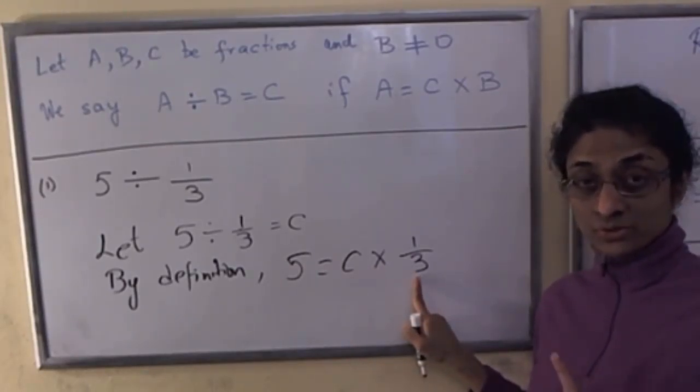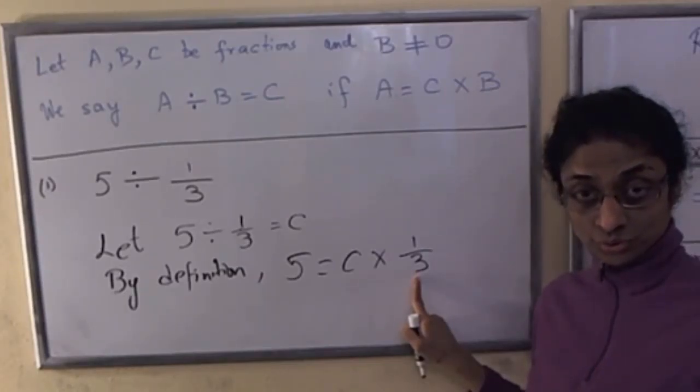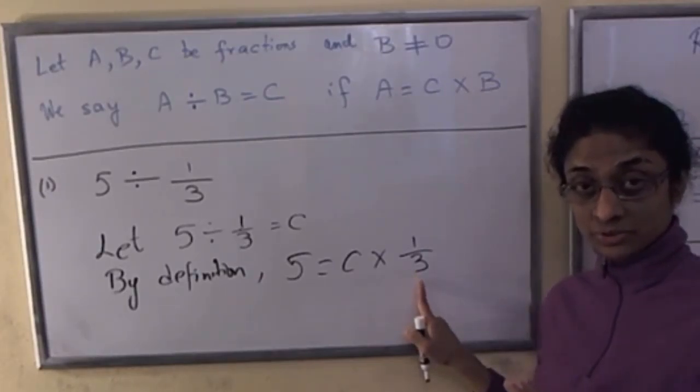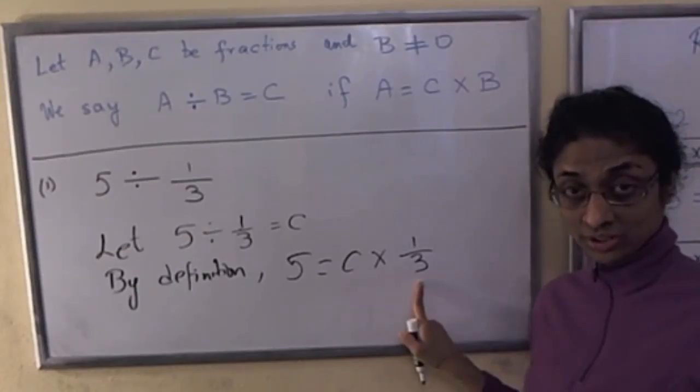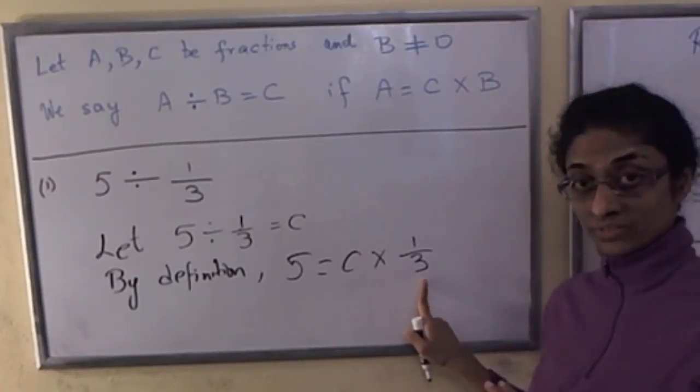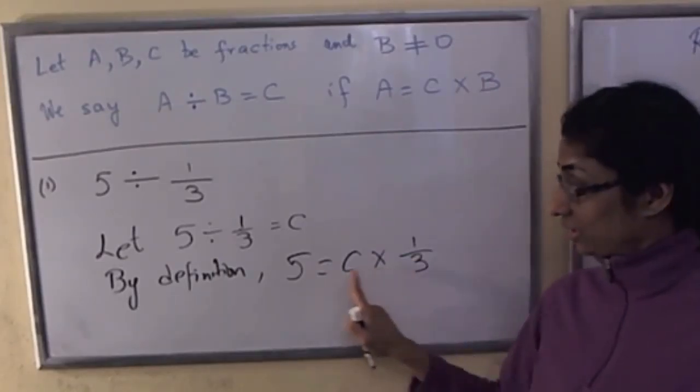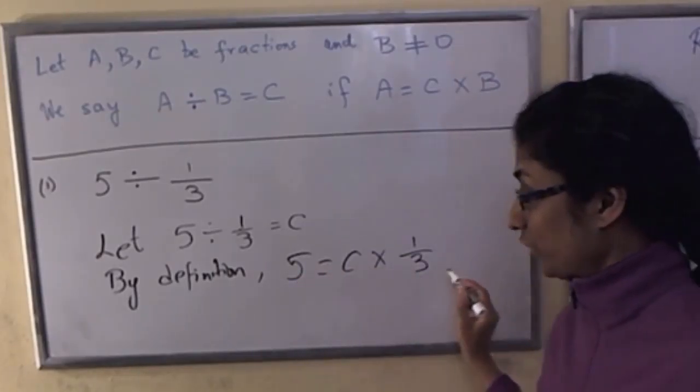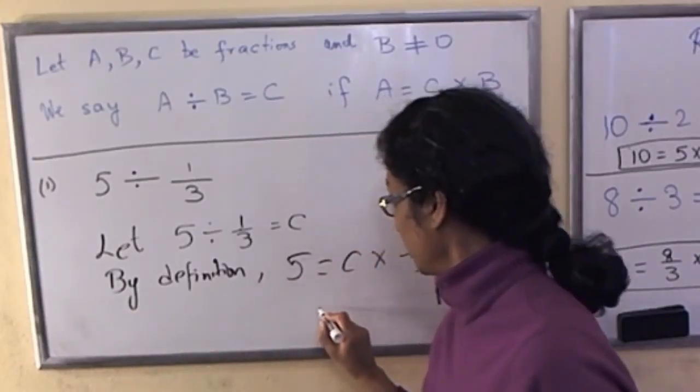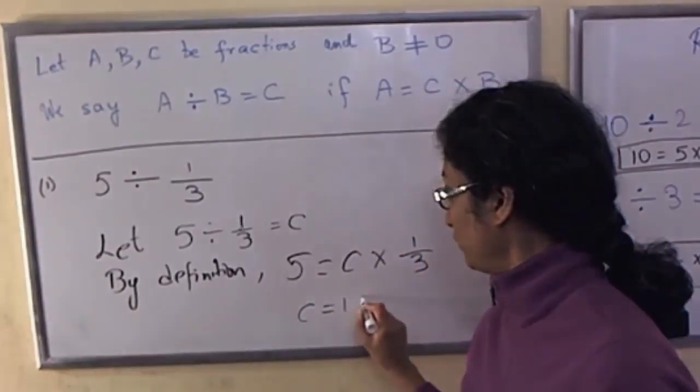6 copies of 1 third give you 2. 9 copies of 1 third give you 3. 12 copies of 1 third give you 4. So 15 copies of 1 third is 5. So from here, we can get c equals 15.